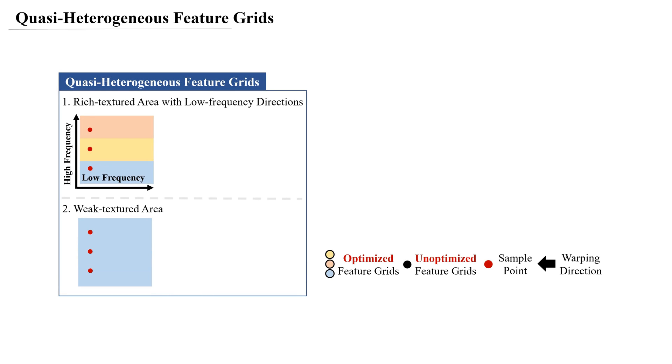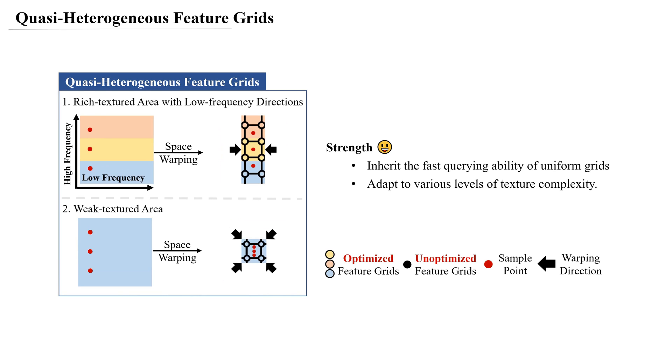Aiming to design a faster and more accurate mapping method, especially for enhancing texture optimization efficiency, our proposed quasi-heterogeneous feature grids inherit the fast querying ability of uniform grids while adapting to various levels of texture complexity.